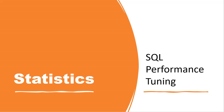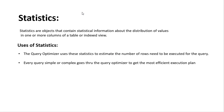In SQL, statistics is a very important thing to consider when it comes to performance tuning. Statistics is an object that contains statistical information about one or more columns of a table. It collects information about the table — like the number of rows and data types. When you create a table, SQL will automatically create these statistics about that table.